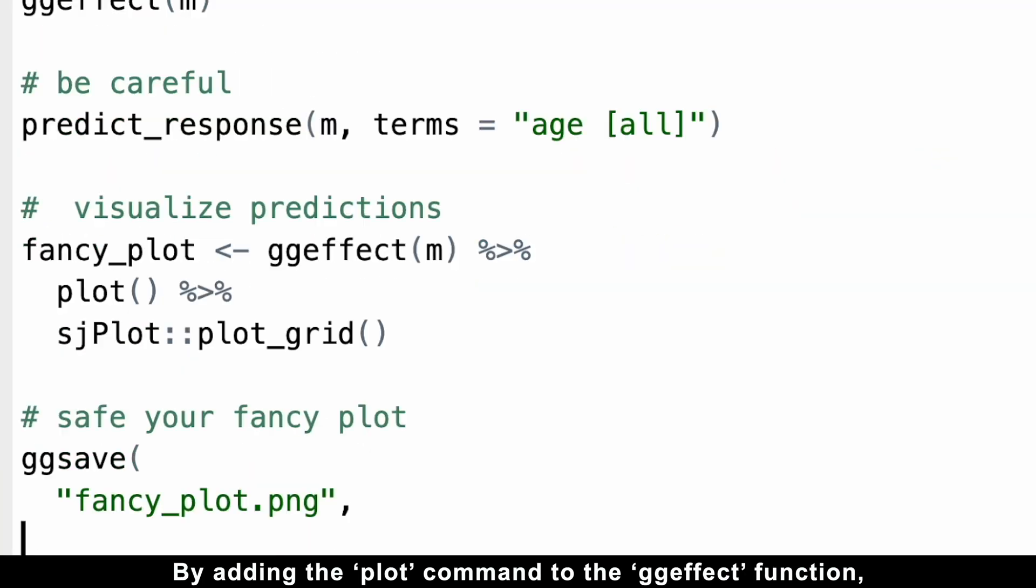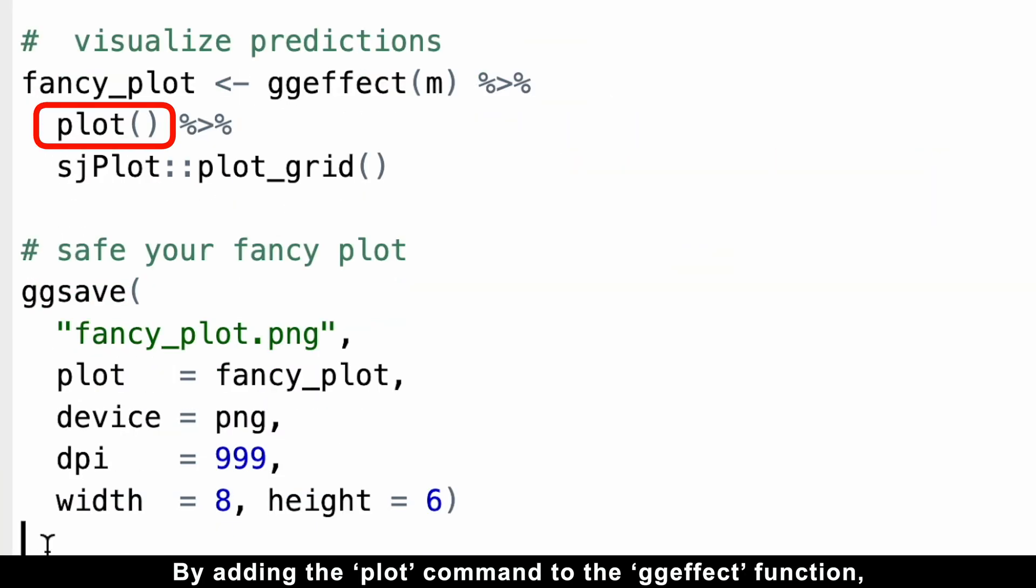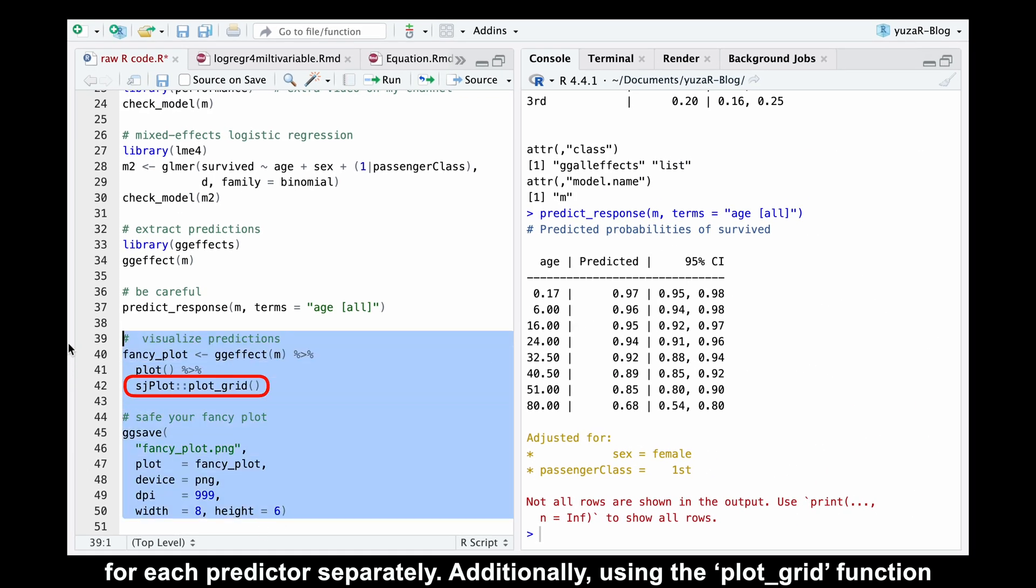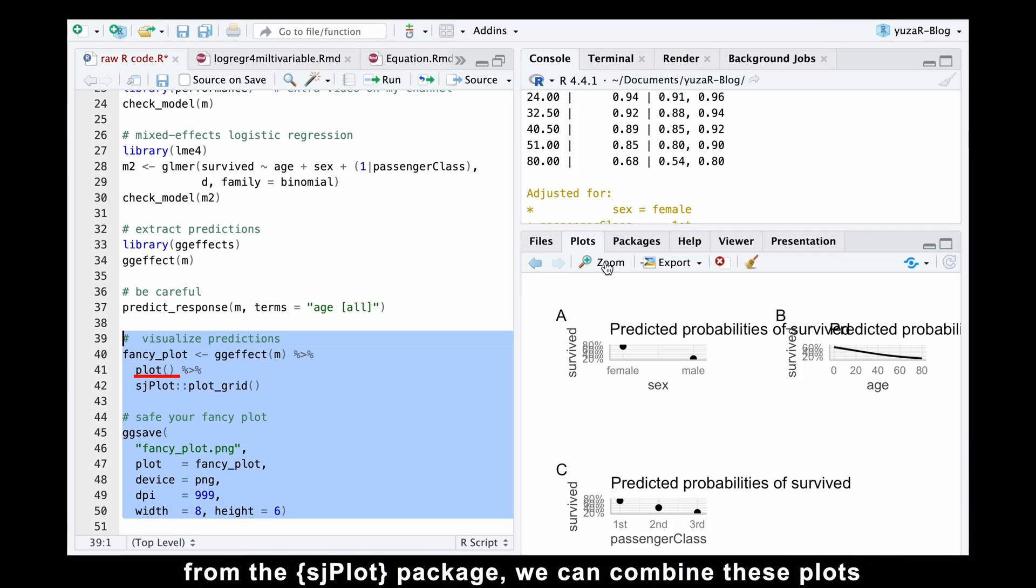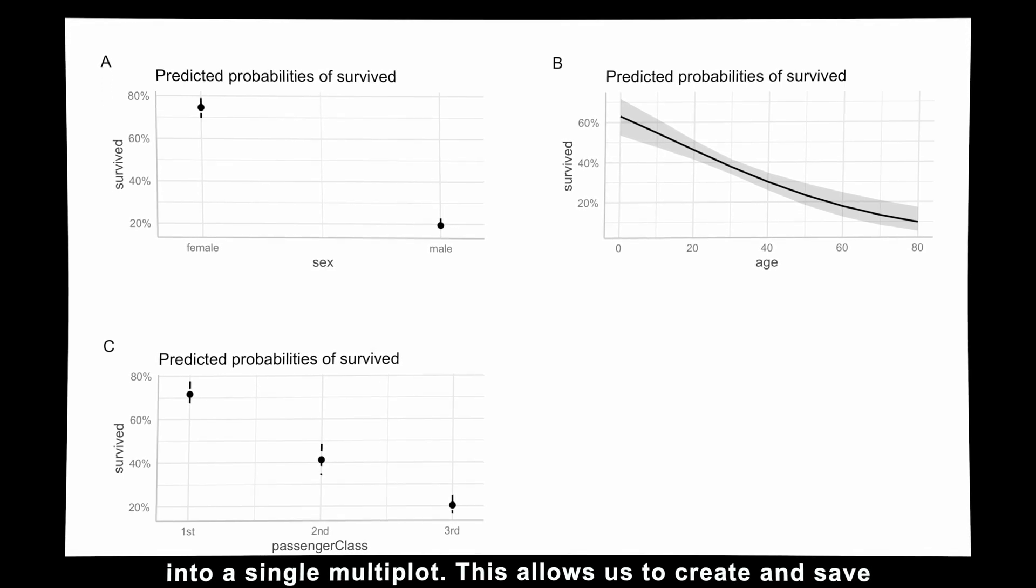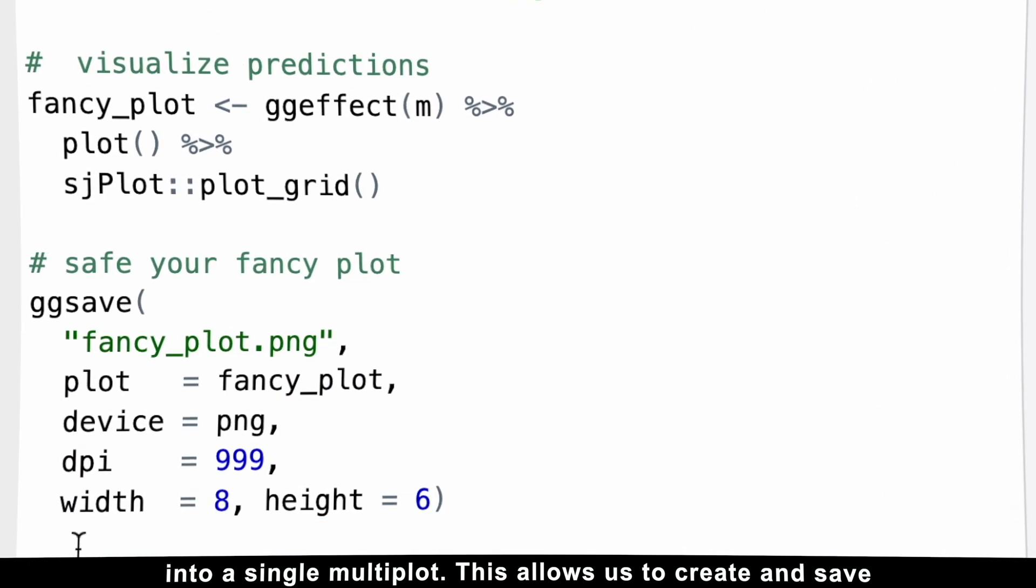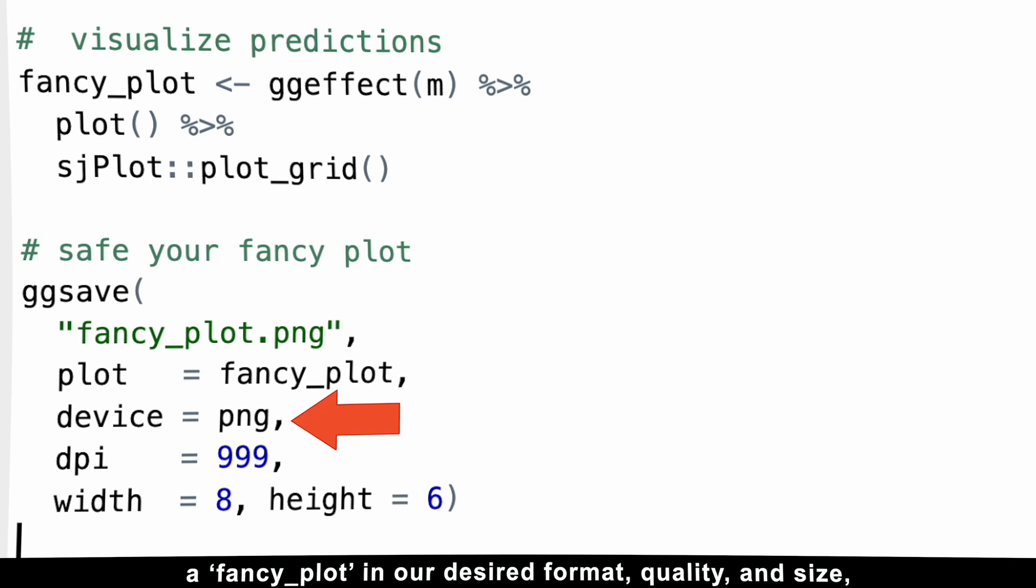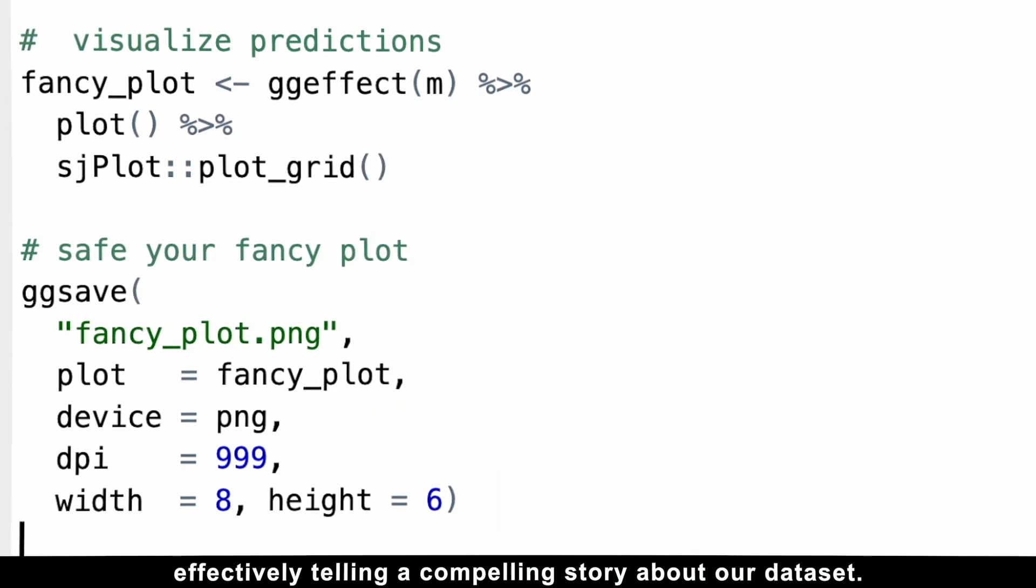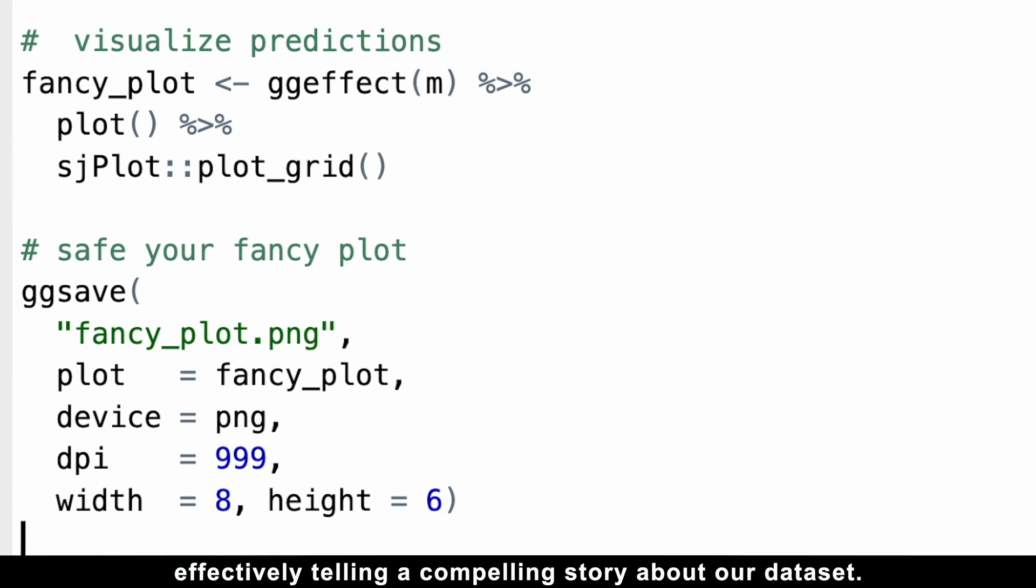By adding the plot command to the ggeffect function, we can visualize the estimated survival probabilities for each predictor separately. Additionally, using the plot_grid function from the sjPlot package, we can combine these plots into a single multi-plot. This allows us to create and save a fancy plot in our desired format, quality and size, effectively telling a compelling story about our dataset.